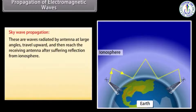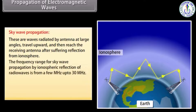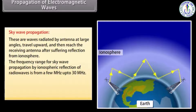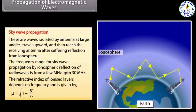Sky wave propagation: these are waves radiated by an antenna at large angles, traveling upward and then reaching the receiving antenna after suffering reflection from the ionosphere. The frequency range for sky wave propagation by ionosphere reflection is from a few MHz up to 30 MHz. The refractive index of ionized layers depends on frequency and is given by √(1 − 81/f²).